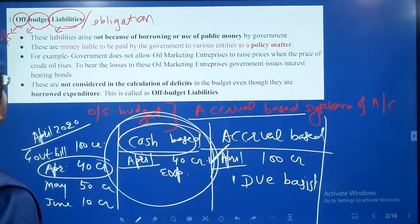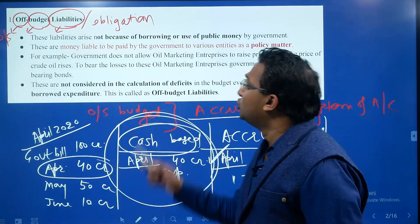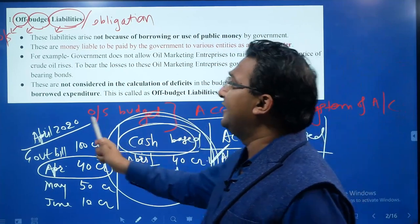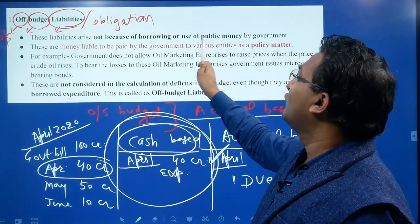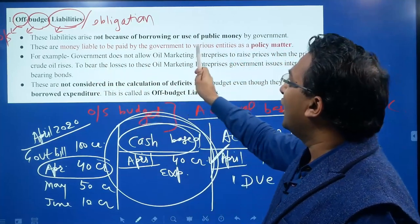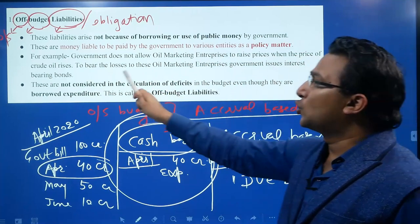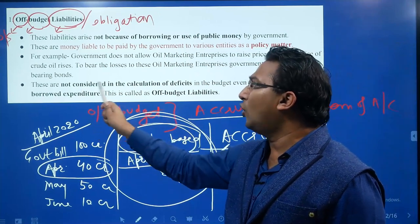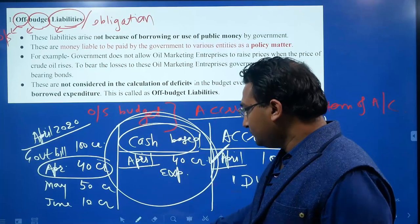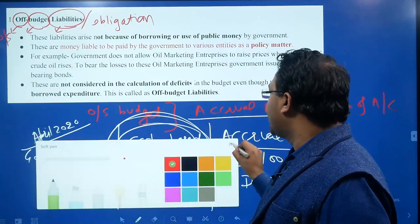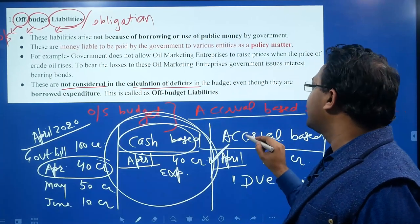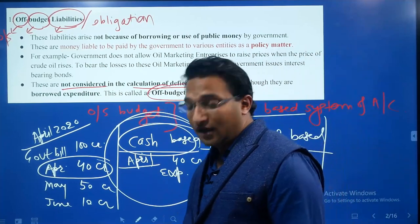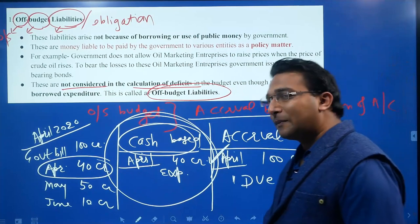In formal terms, off-budget liabilities arise not because of direct borrowing or use of public money by the government, but are money liable to be paid by the government to various entities as a policy matter. For example, when the government does not allow oil marketing enterprises to raise prices as crude oil prices rise, it issues interest-bearing bonds to compensate them. These are not considered in the calculation of the deficit in the budget, even though they are borrowed expenditure. This is called off-budget liability.